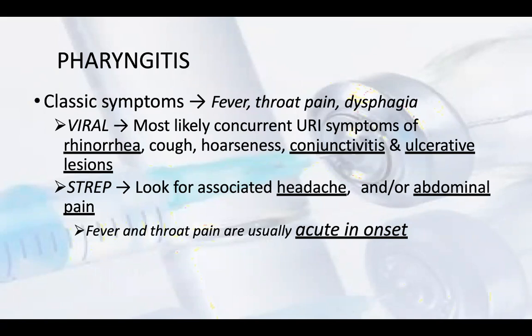Classic symptoms include fever, throat pain, and dysphagia. In viral pharyngitis, there is most likely concurrent upper respiratory infection symptoms including rhinorrhea, nasal congestion, cough, hoarseness, conjunctivitis, and ulcerative lesions are possible. For Streptococcal pharyngitis, look for associated headache, abdominal pain, fever, and throat pain.